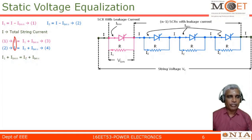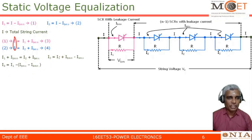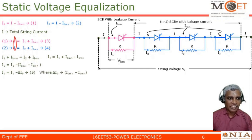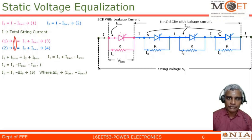From this, I2 equals I1 plus IBMN minus IBMX. Taking the minus sign as common: I2 equals I1 minus (IBMX minus IBMN). Let delta IB equal IBMX minus IBMN. So I2 equals I1 minus delta IB, where IBMX is the leakage current of the identical thyristors in the string and IBMN is the leakage current of the unique SCR with a different value. This difference is delta IB — equation 5.